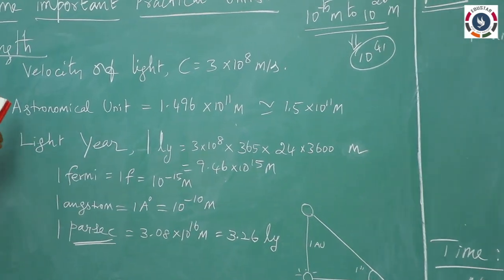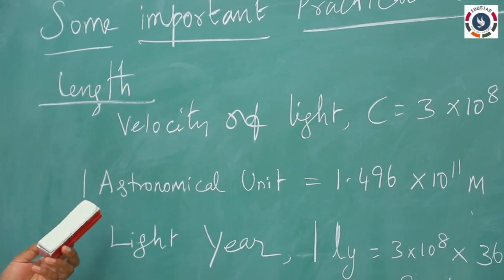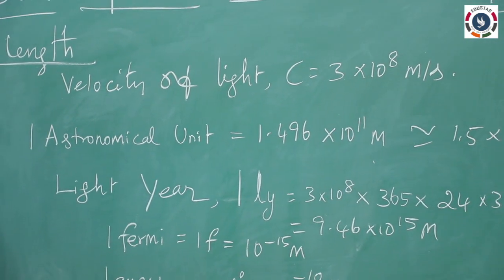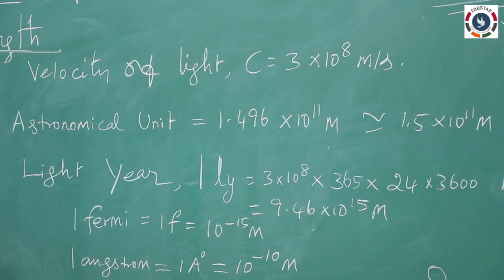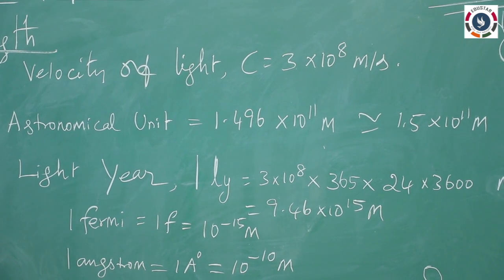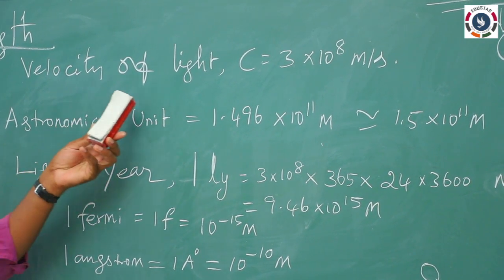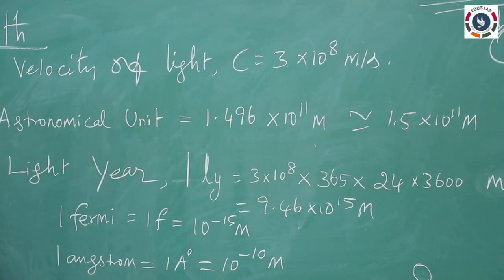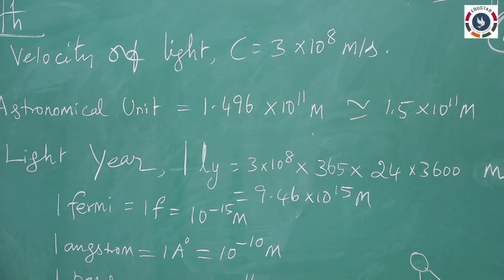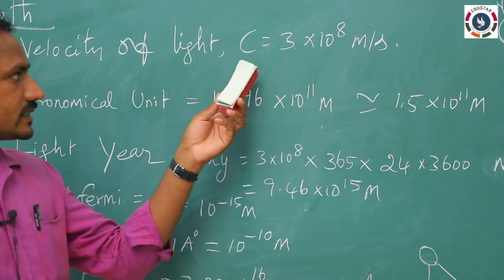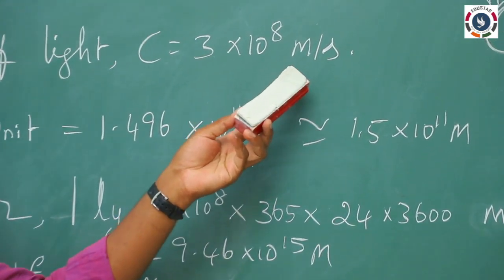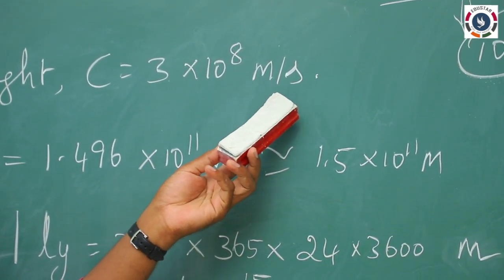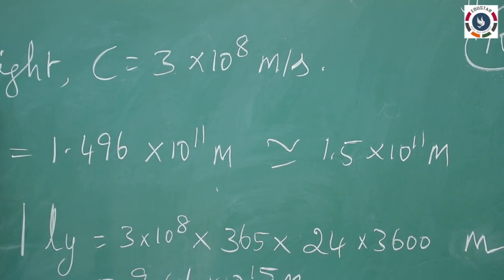According to length, while measuring the length, we consider various methods to measure the distance — longer distances and shorter distances. For this, the very important thing is the velocity of light. Based on this, larger distances can be found. The velocity of light c has a value of 3×10⁸ meter per second, which is the SI unit of the physical quantity velocity.